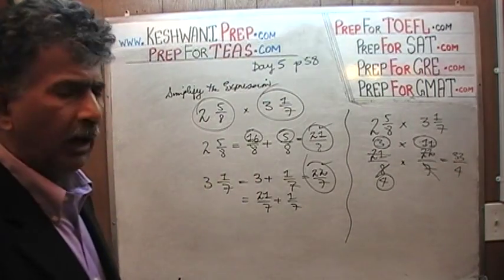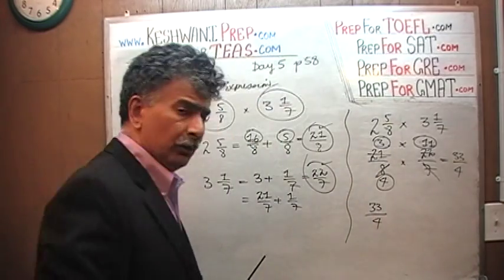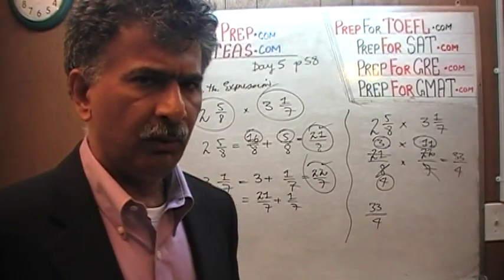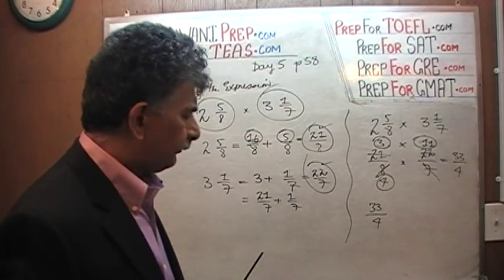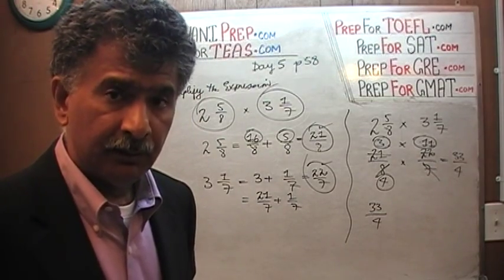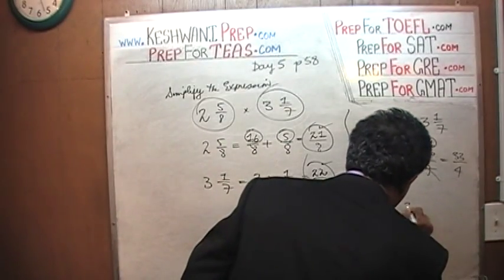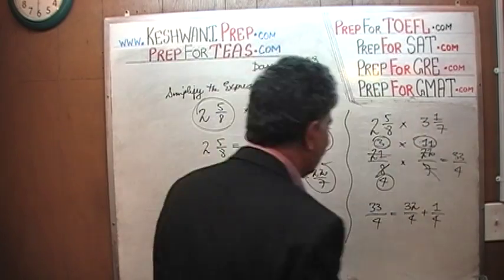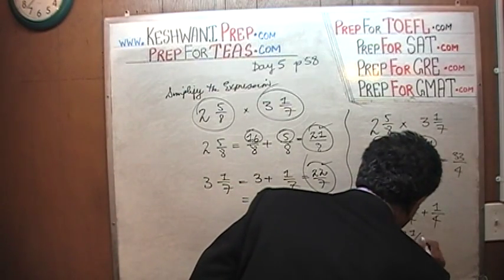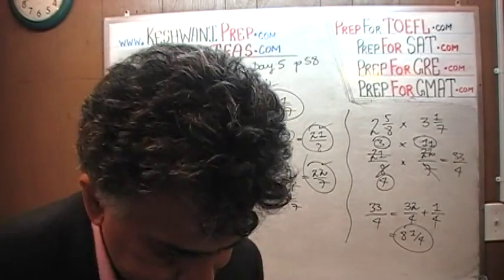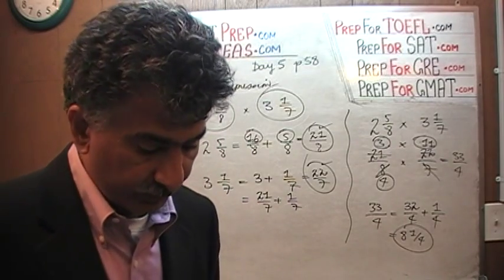We are not quite done yet. We have 33 over 4. Thirty-three divided by 4 can be written as 32 over 4 plus 1 over 4. And 32 over 4 is simply 8. So we end up with 8 and a quarter. That's our final answer: 8 and a quarter. That was the first example in the book, which they solve for us. Let's do the next one.